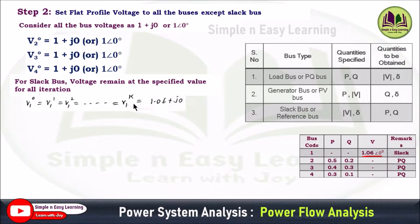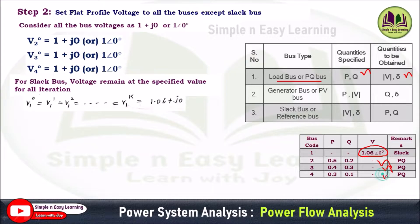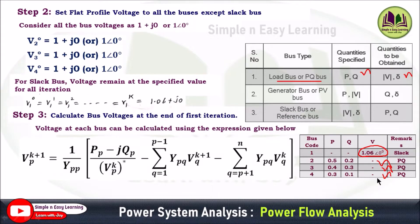Now, moving to Step 3. Before proceeding, bus 1 is the slack bus. The problem asks us to determine bus voltages at the end of the first iteration. For load buses, the quantities specified are P and Q, and the quantities to be obtained are voltage magnitude and angle. We need to obtain voltages for buses 2, 3, and 4. We start with bus 2 using the Gauss-Seidel voltage equation.